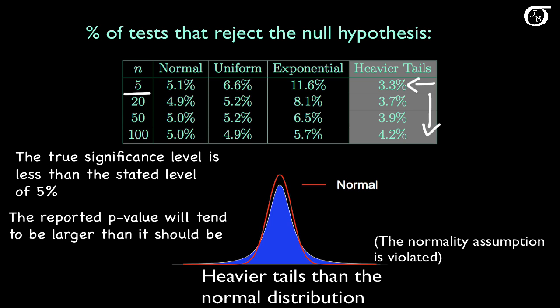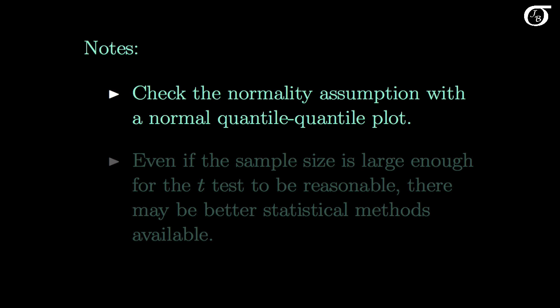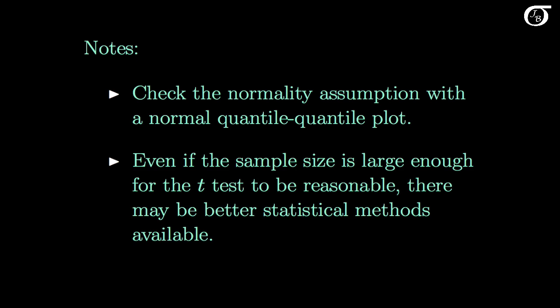If we simply report the results of a t-test when the normality assumption is violated, we may very well be misleading ourselves or others. As with any statistical inference procedure, we should investigate the assumptions where possible. We should check the normality assumption with a normal quantile-quantile plot to see if the t-test is reasonable. Even if the sample size is large enough for the t-test to be valid, there may be better methods available — for example, if drawing a large sample from an exponential distribution, we'd be better off using methods based on the exponential distribution rather than relying on the large-sample properties of the t-test.